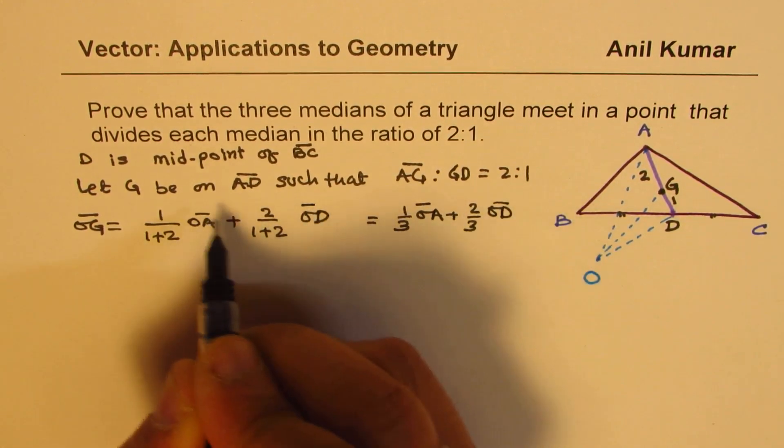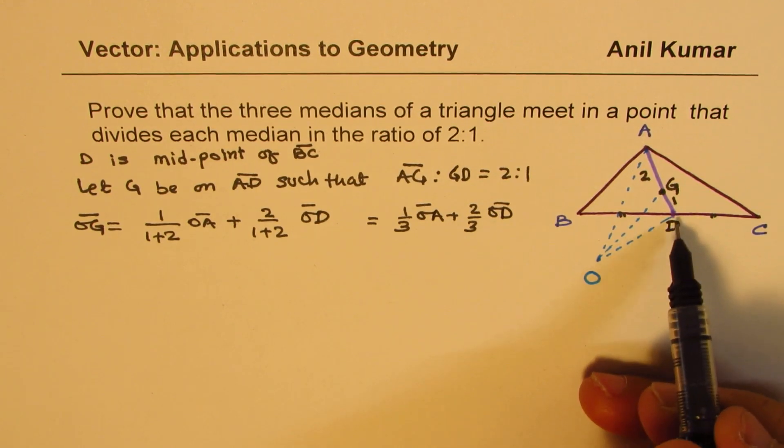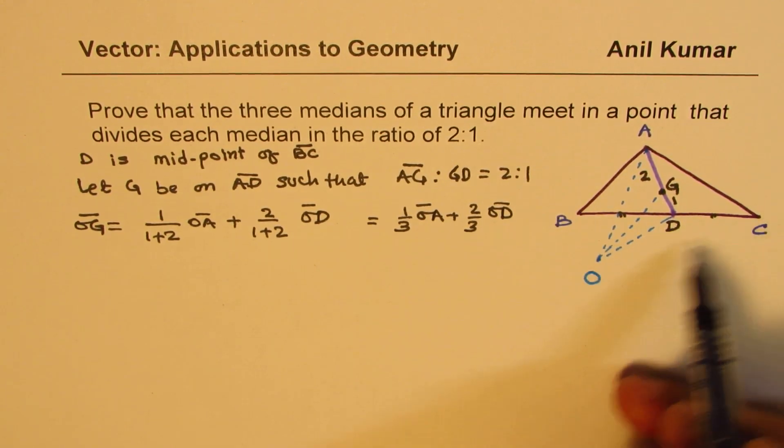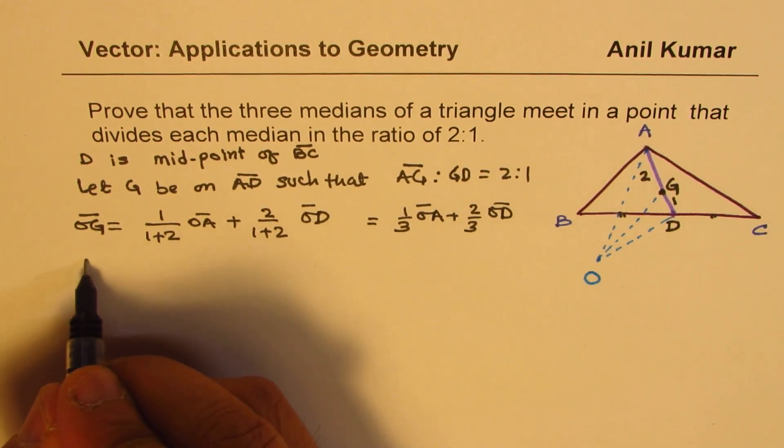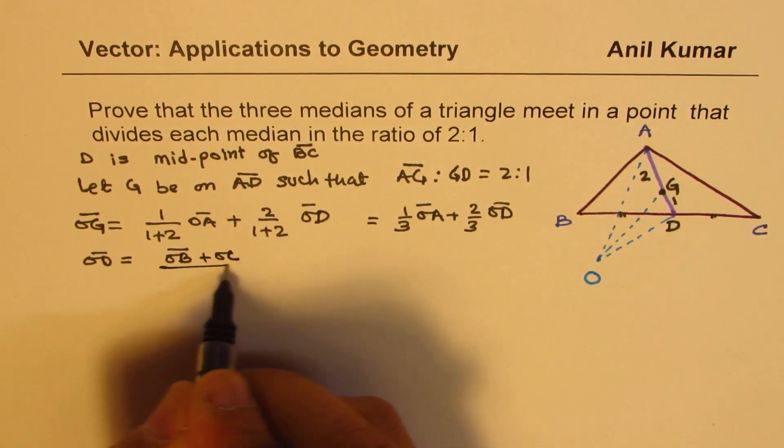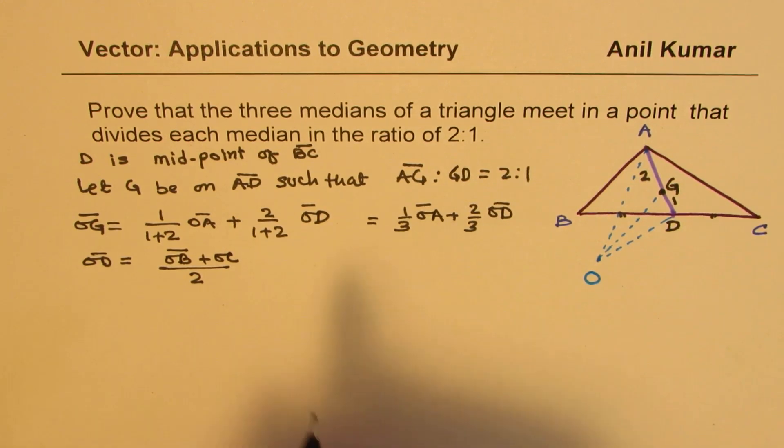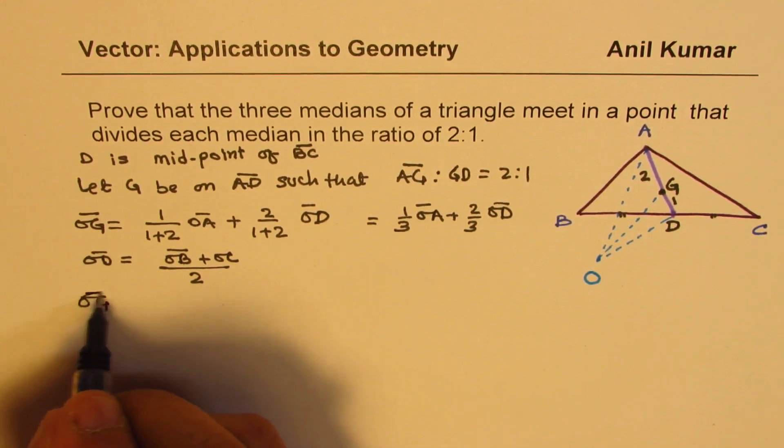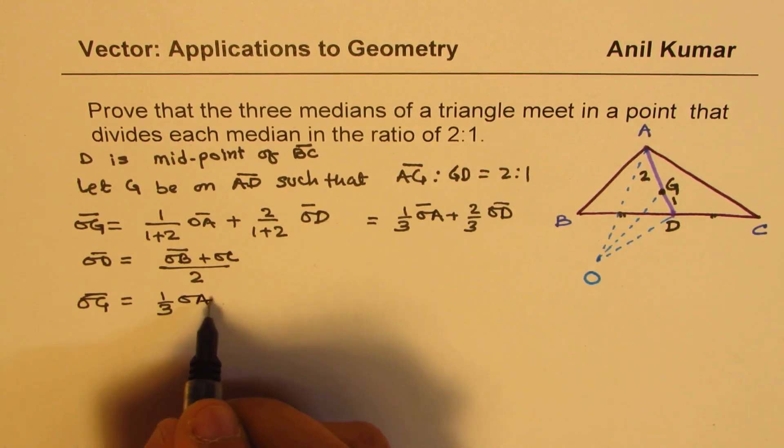What is OD equal to? OD is the midpoint of OB and OC, so we know that OD is basically equal to (OB + OC)/2. So if I replace this here we get OG equal to 1/3 of OA plus 2/3 of (OB + OC)/2.